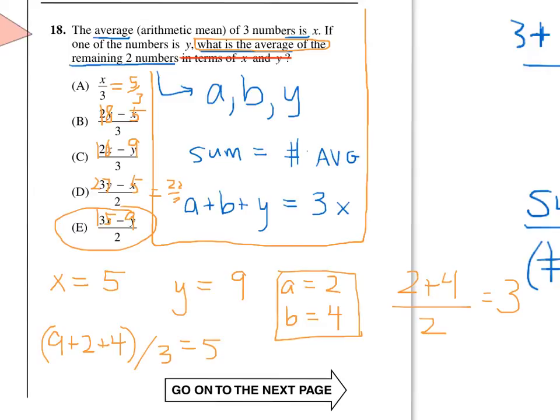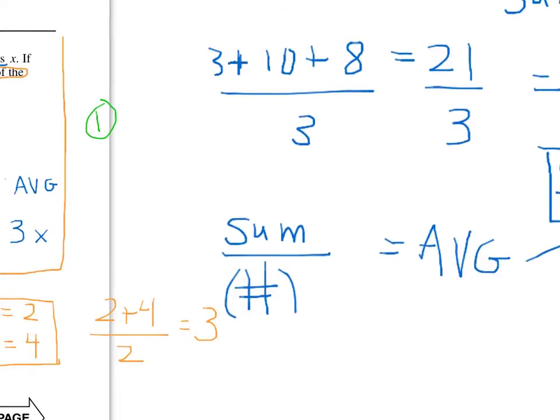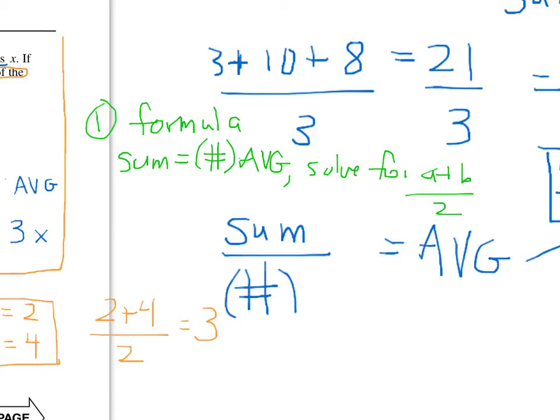So, let's put it all together. What are our two ways? The first way that we used was this formula: the sum equals the number of numbers times the average. And then we solved for what we were looking for. We solved for a plus b over 2. And the second method that we used was we picked numbers for the variables. So, we replaced x, y, a, and b with numbers. And then we tested the answers.